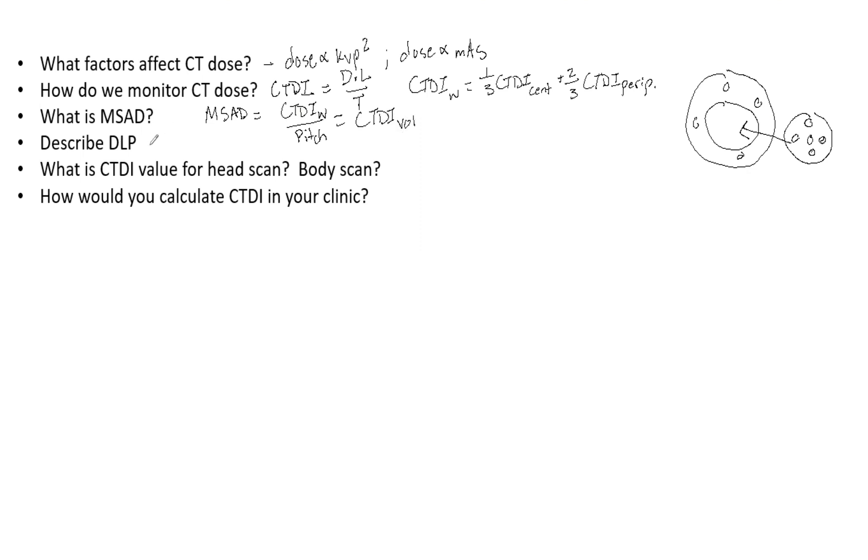So now what is DLP? I'm going to have to hop over here. DLP is the dose length product. This measures total radiation exposure from a series of scans. So the DLP is the CTDIVOL, and that is, again, similar to MSAD. It is the CTDI weighted divided by the pitch, and that's multiplied by the irradiation length.